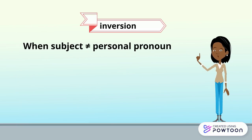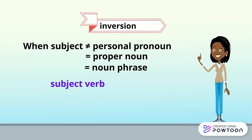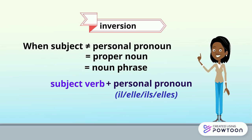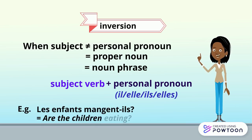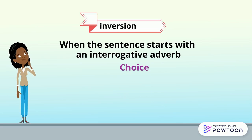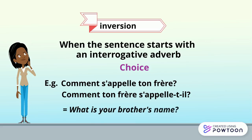When the subject is not a personal pronoun but a proper noun or a noun phrase, the order subject-verb is kept, but a personal pronoun is added. For example: "Les enfants mangent-ils?" — are the children eating? When the sentence starts with an interrogative adverb, we have the choice. For instance: "Comment s'appelle ton frère?" or "Comment ton frère s'appelle-t-il?" — what is your brother's name?